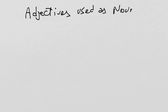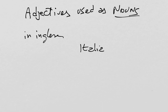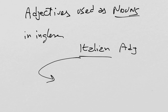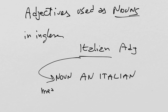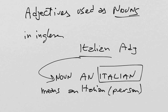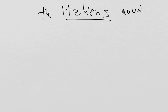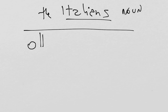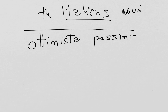Let's look now at adjectives used as nouns. This is a very common occurrence in English as well. For instance, in English, 'Italian' is an adjective, but we can transform it into a noun and say an Italian — that becomes a noun meaning an Italian person. In the plural we say the Italians. Although Italian, initially, is an adjective, a qualification, it is used as a noun. Examples in Italian: ottimista and pessimista — optimist and pessimist. These are adjectives.